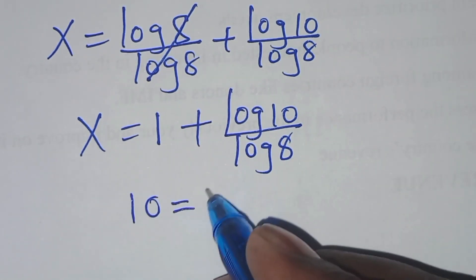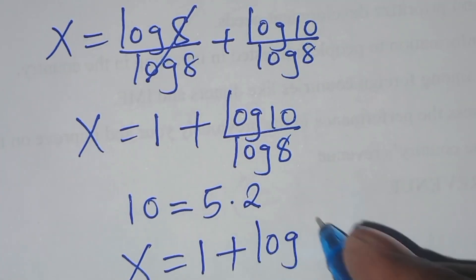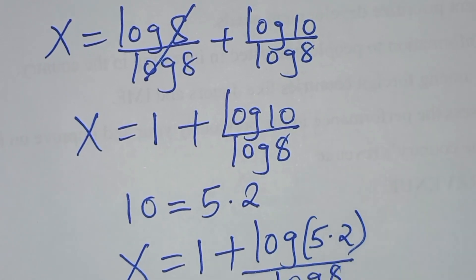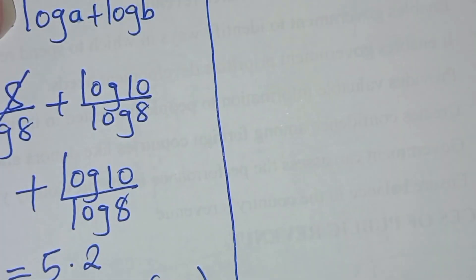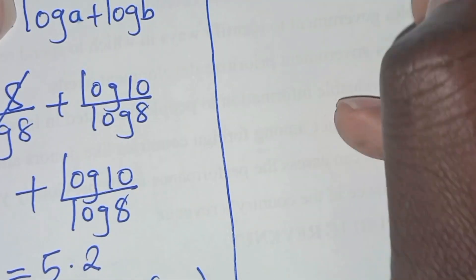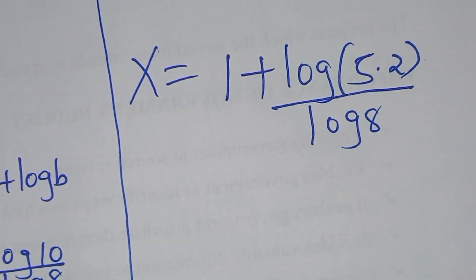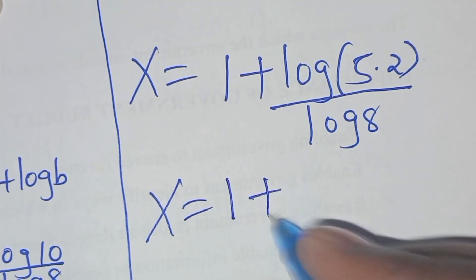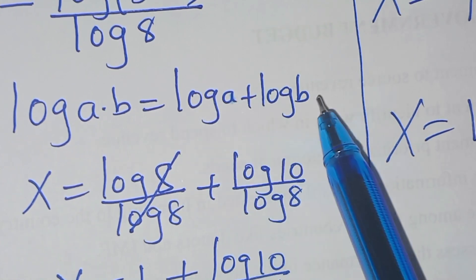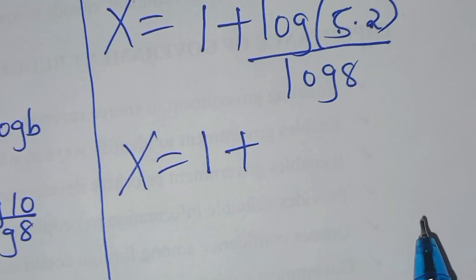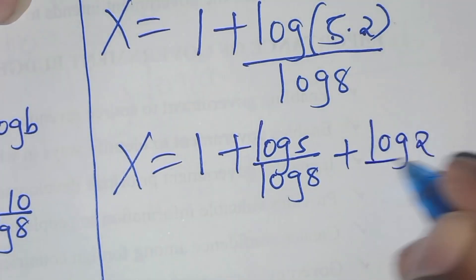We can express 10 as 5 times 2, so x will be equal to 1 plus log(5 times 2) divided by log 8. Since log(5 × 2) is in the form of log A times B, which we can express as log A plus log B, this gives us log 5 divided by log 8 plus log 2 divided by log 8.